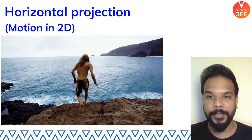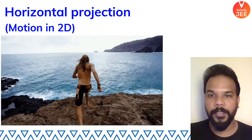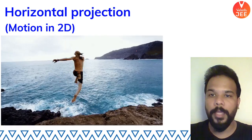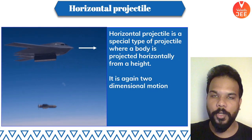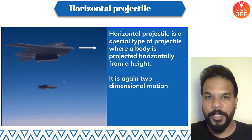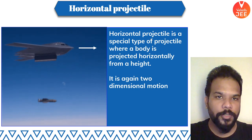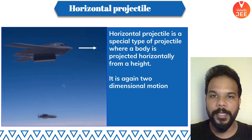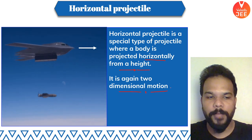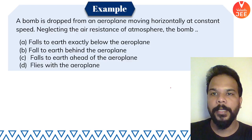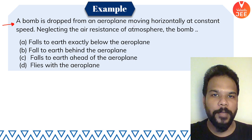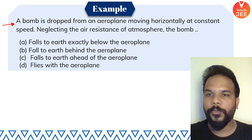You can see in the animation: a guy is running and then jumps — this sets the basis of horizontal projection. Horizontal projection is a very typical situation we'll encounter. It is basically a special type of projectile motion where a body is projected horizontally from some height. It's a two-dimensional motion, and before diving in, let me ask a conceptual question based on the animation.